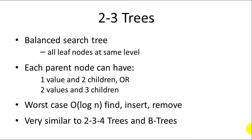2-3 trees are balanced search trees, so all leaf nodes in the tree are at the same level. Each parent node can have either one value and two children, or two values and three children. The great thing about 2-3 trees is that they offer worst case O(log n) performance for find, insert, and remove operations, which is much better than binary search trees in the worst case.